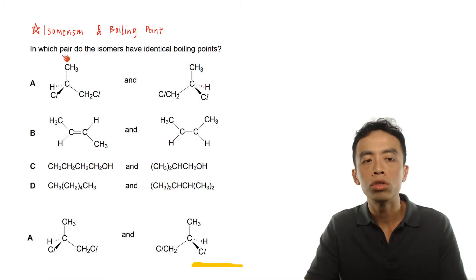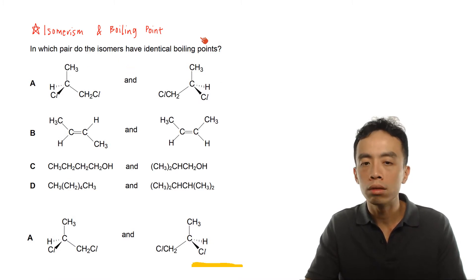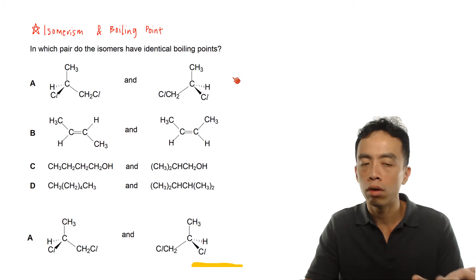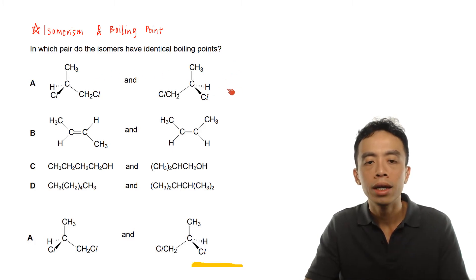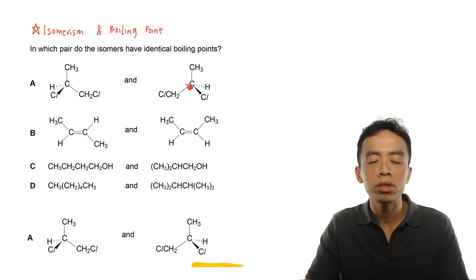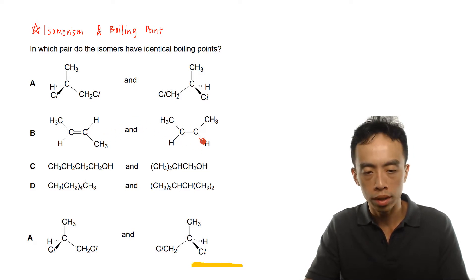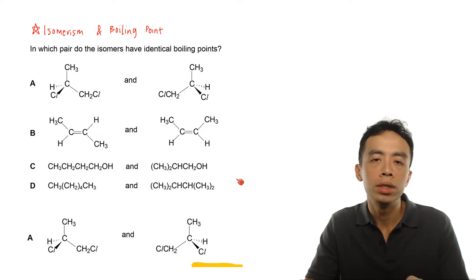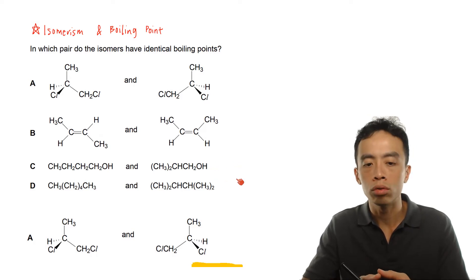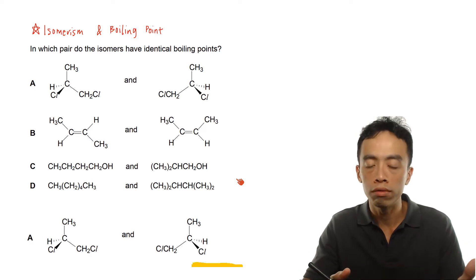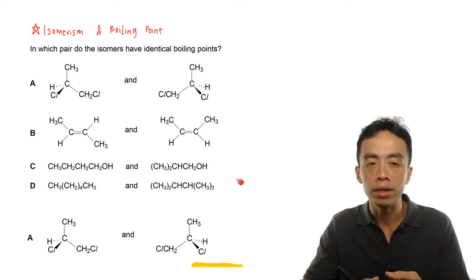The question is: in which pair do the isomers have identical boiling points? We have four options. Option A consists of optical isomers, option B consists of cis-trans isomers, and options C and D will be classified as chain isomers — this is more obvious when we draw out the structures, so we can talk about it later.